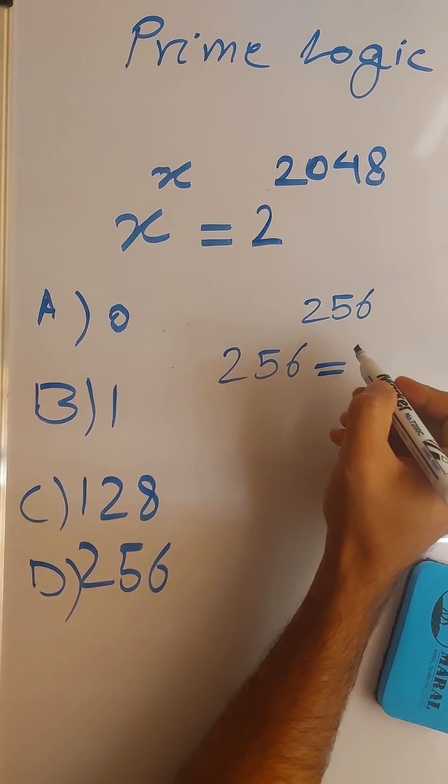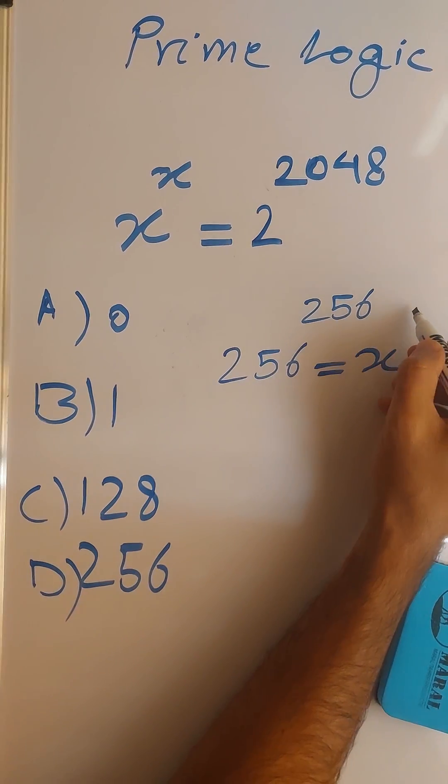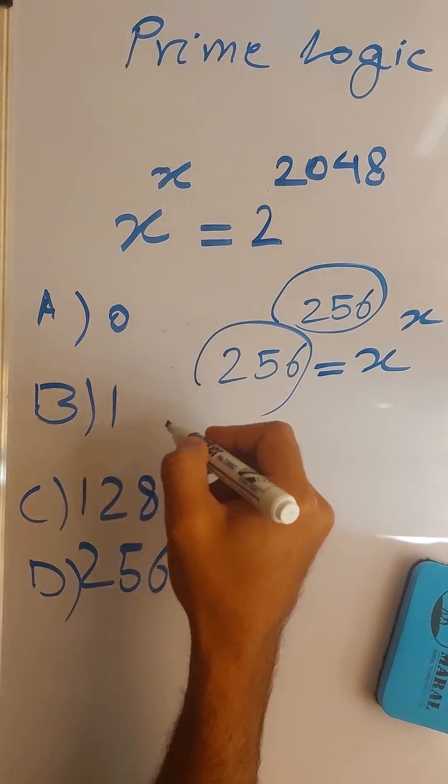And now the base and exponent are the same, the same as x to the power of x. So now we can say that x equals 256.